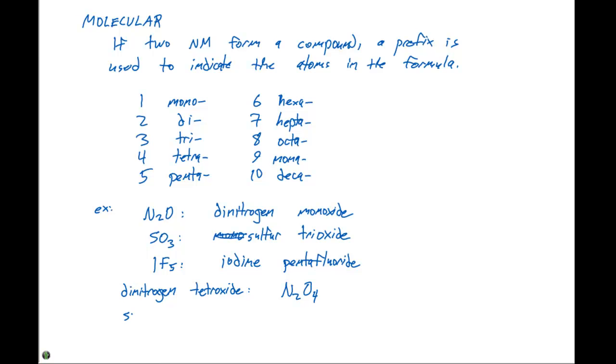If we have sulfur hexafluoride, we can say that there's gonna be one sulfur. Again, we drop the mono prefix, and it's hexafluoride, so it's gonna be F6. So the chemical formula here is gonna be SF6.